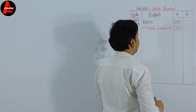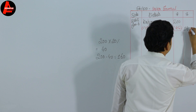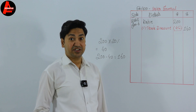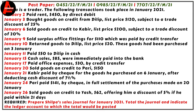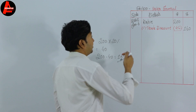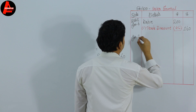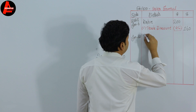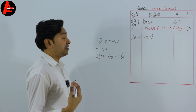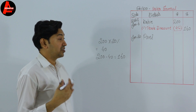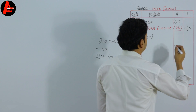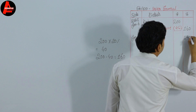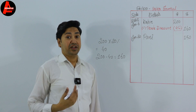The second transaction is January 20: sold goods on credit to Party for $150, with no trade discount. We write the date January 20 and the customer name Party. Since there is no trade discount on this transaction, we write the selling price of $150 directly to the outer column.